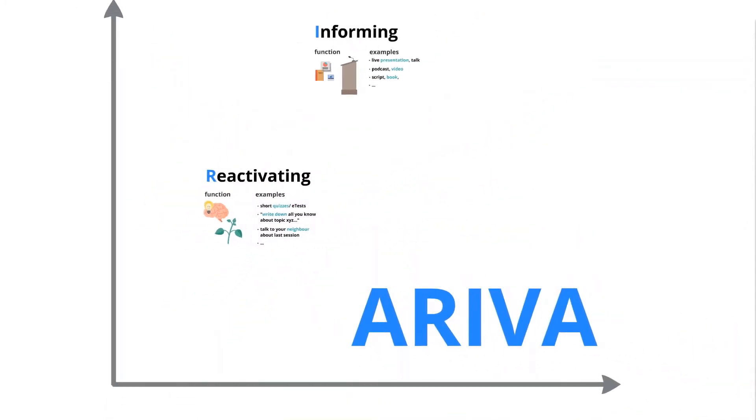These are two of the five phases of the Arriva model, a model to structure your session. It characterizes the specific phases via their novelty over time.